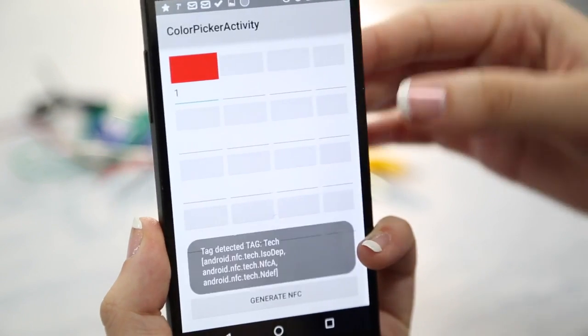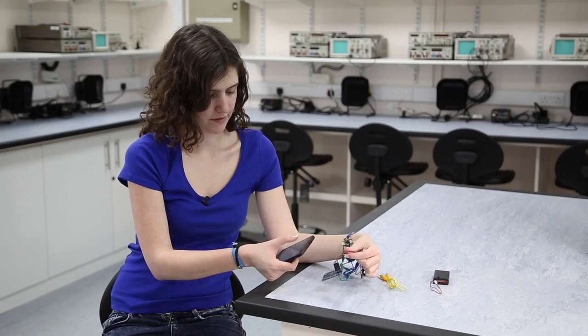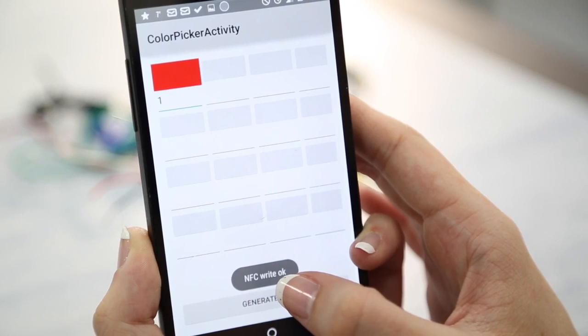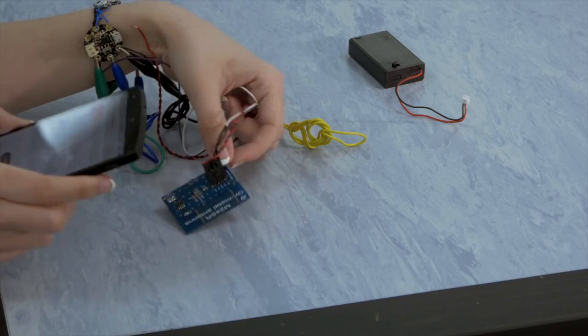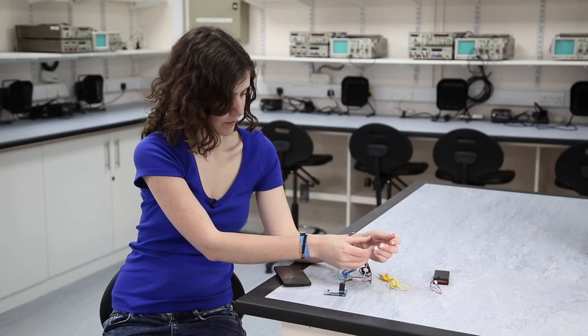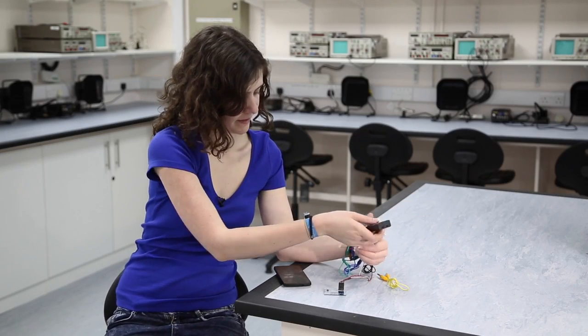So now I'm going to put the NFC reader against my phone and generate the signal. So that's updated the tag and now I'm going to power up the device using the battery pack.